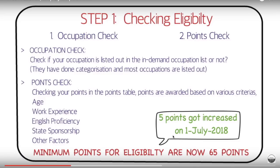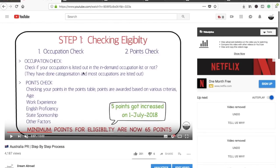The first and foremost thing to check is the minimum points for eligibility, which are now 65 points — this got increased on the first of July. There are two steps to checking eligibility: the first is the occupation check and the second is the points check. If you score more than 65 points, you'll be eligible.